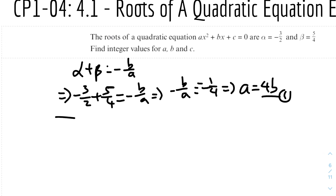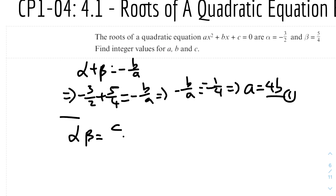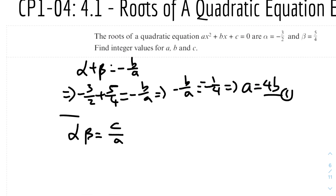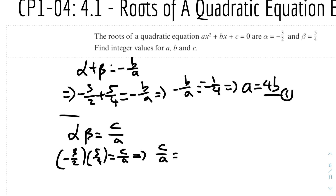Alpha times beta equals c over a. Computing: (minus 3 over 2) times (5 over 4) equals minus 15 over 8. So c over a equals minus 15 over 8, and rearranging gives 8c equals minus 15a.